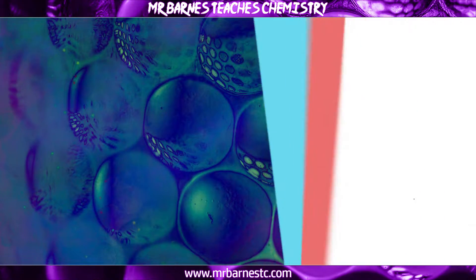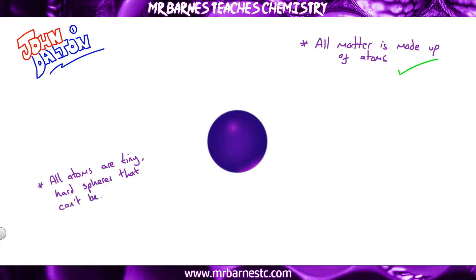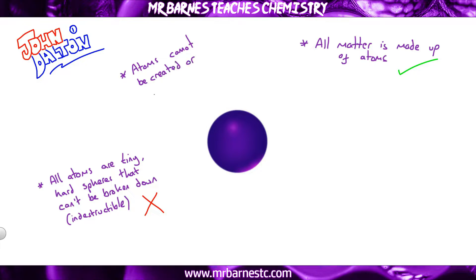Starting with John Dalton - he first proposed the atom and suggested that everything, all matter, is made up of atoms. We know that's still true today. He also suggested that all atoms are tiny, hard spheres that cannot be broken down - in other words, indestructible. We now know that's not true, as we have protons, neutrons and electrons. He also suggested that atoms cannot be created nor destroyed, which is true, and that the atoms in an element are identical, which is also true.